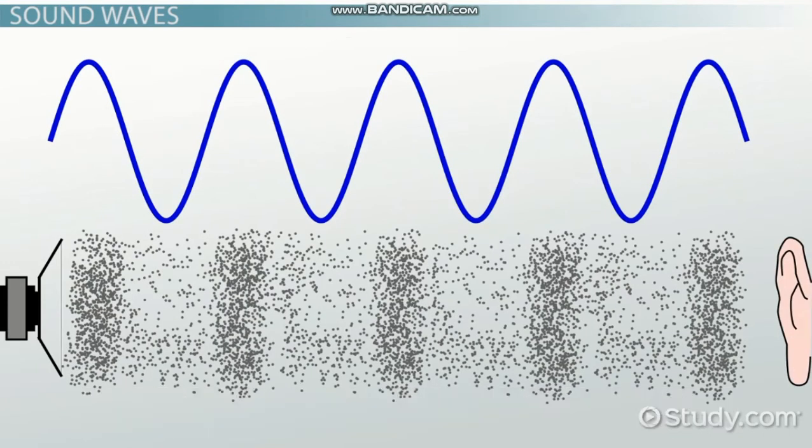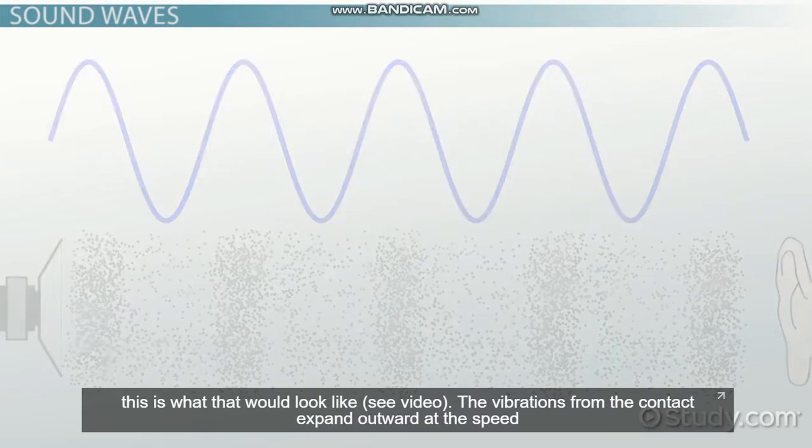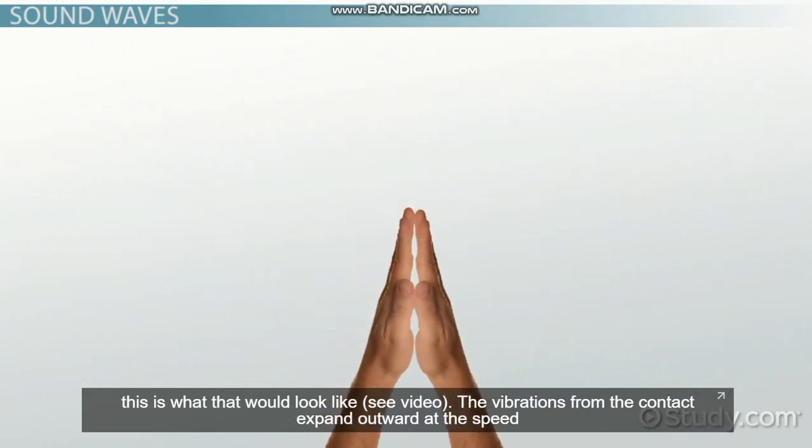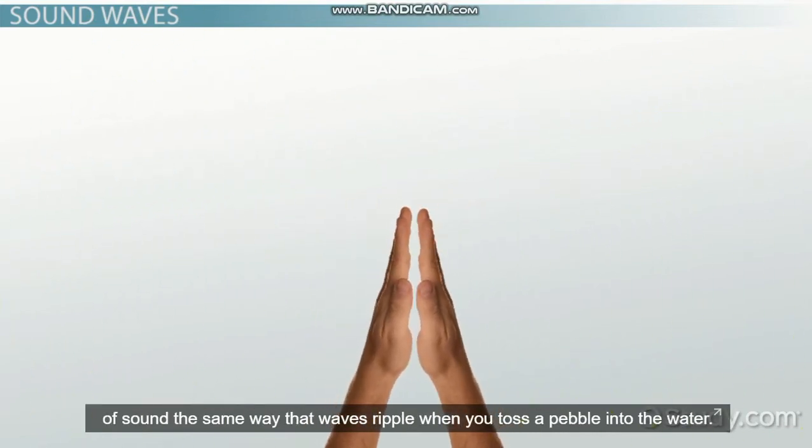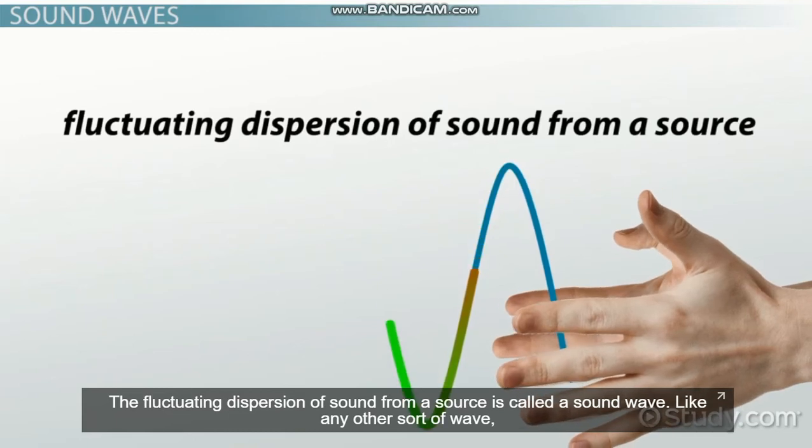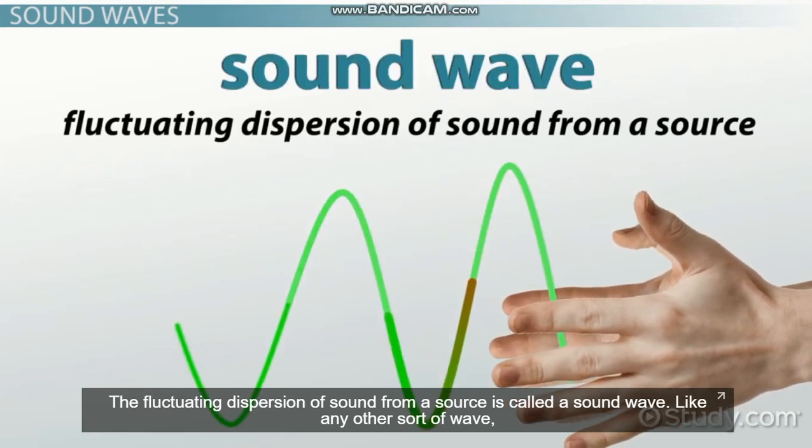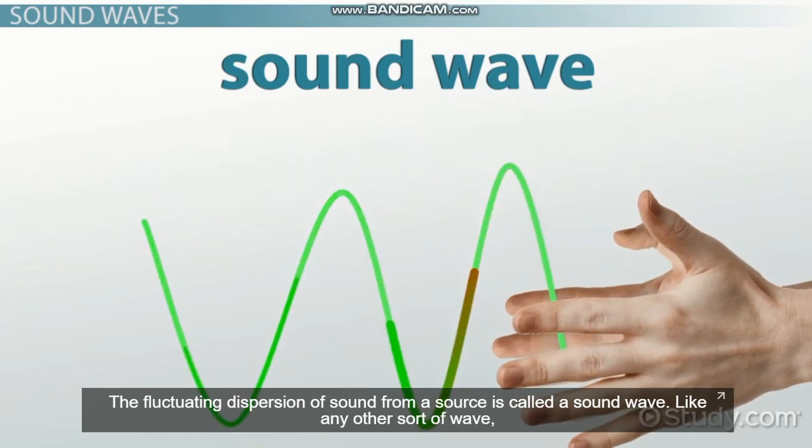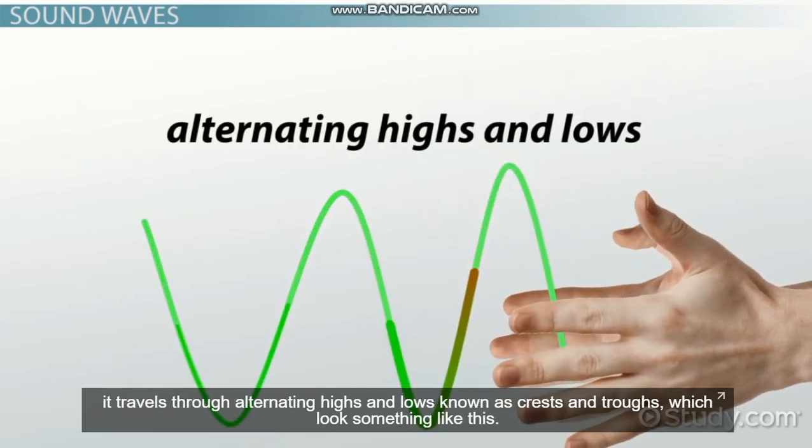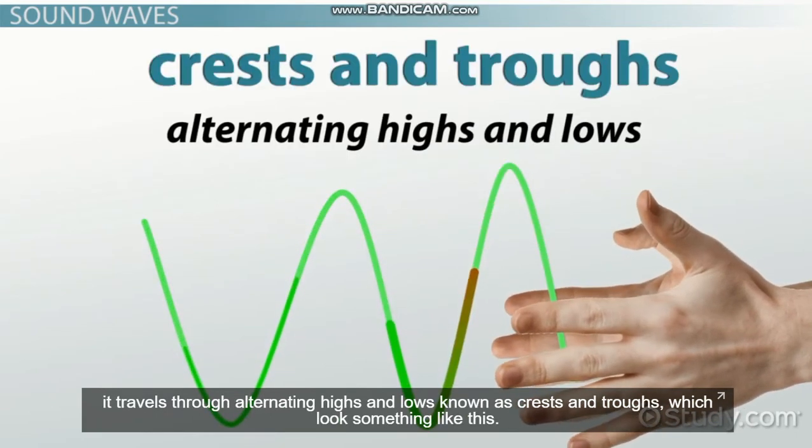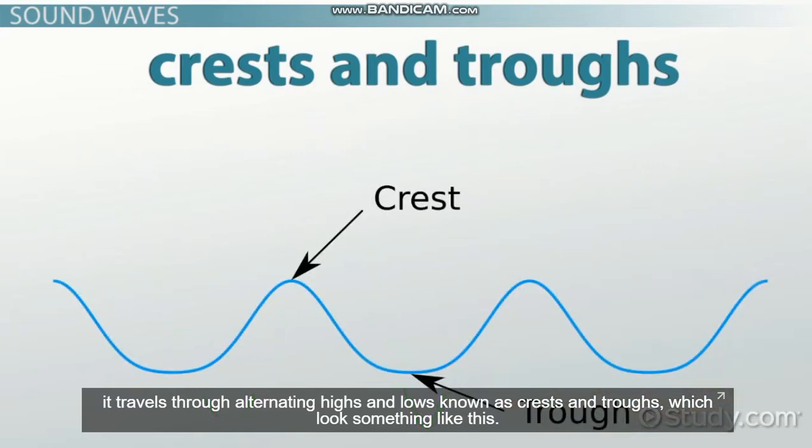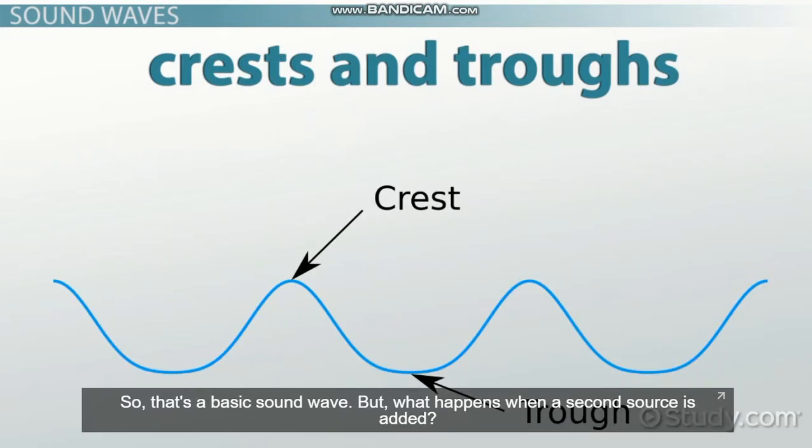If we could see sound, this is what it would look like. The vibrations from the contact expand outward at the speed of sound, the same way that waves ripple when you toss a pebble into water. The fluctuating dispersion of sound from a source is called a sound wave. Like any other wave, it travels through alternating highs and lows known as crests and troughs. So that's a basic sound wave.